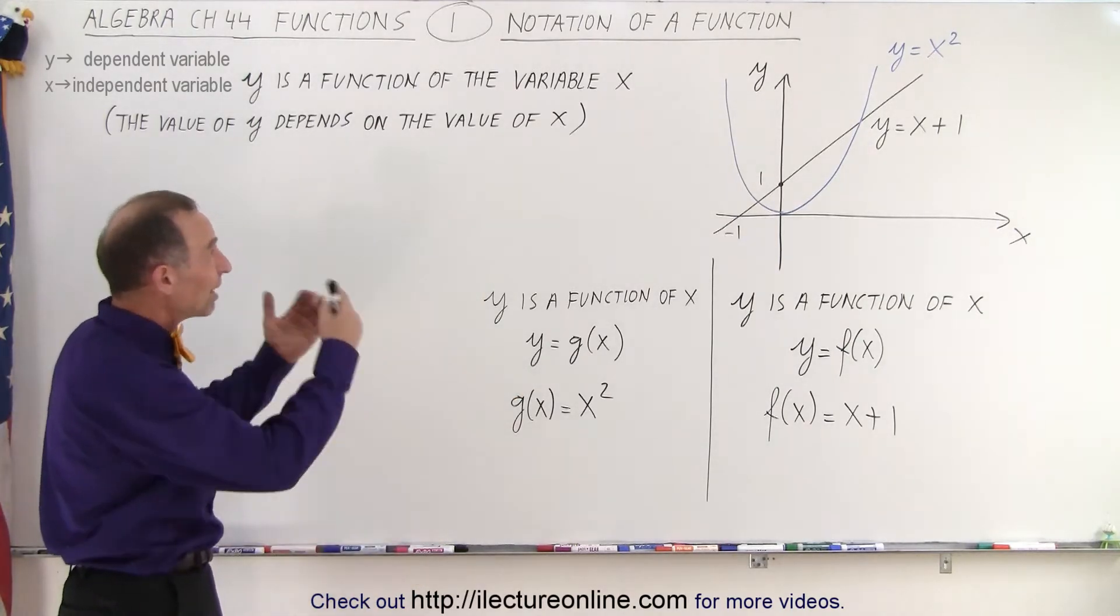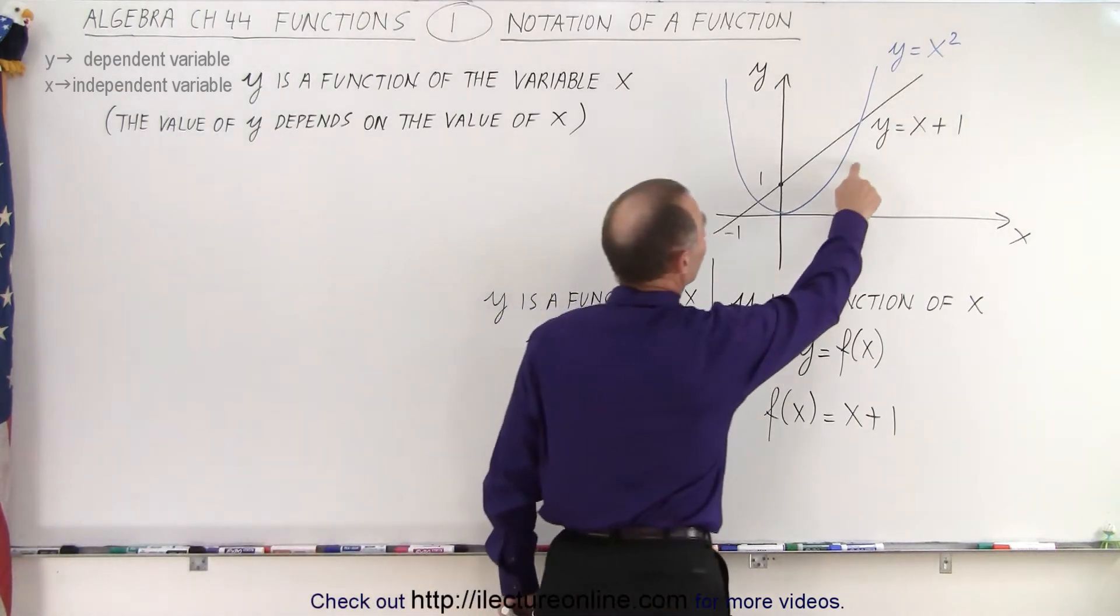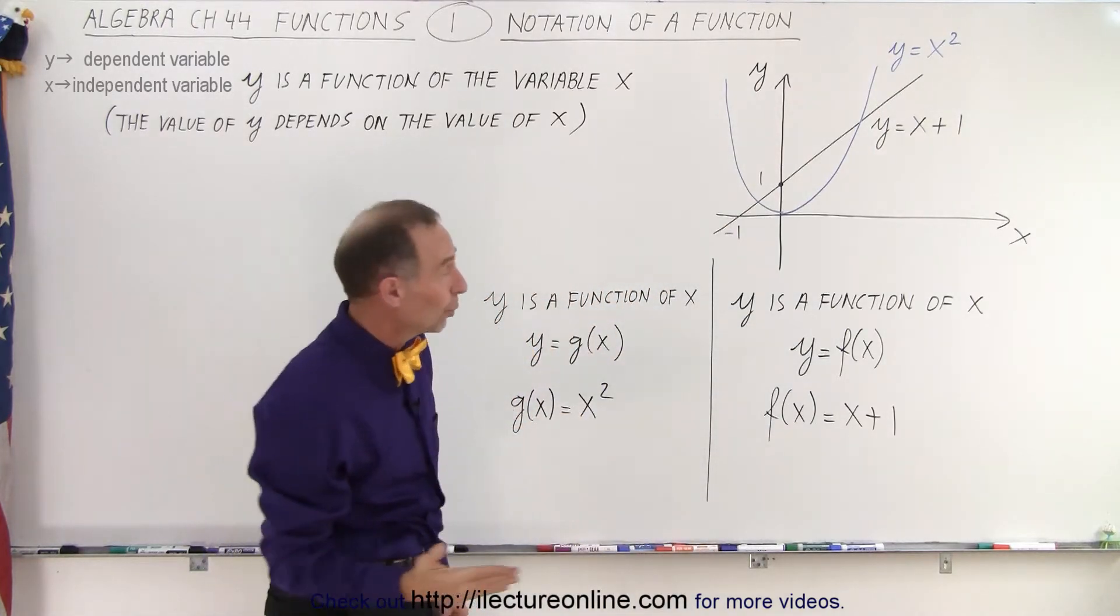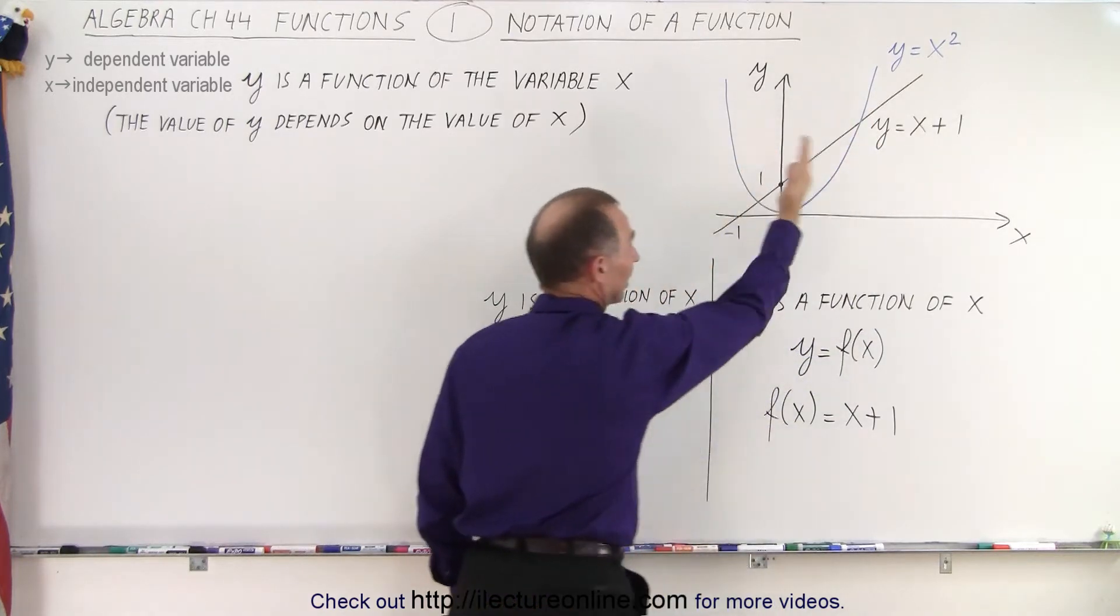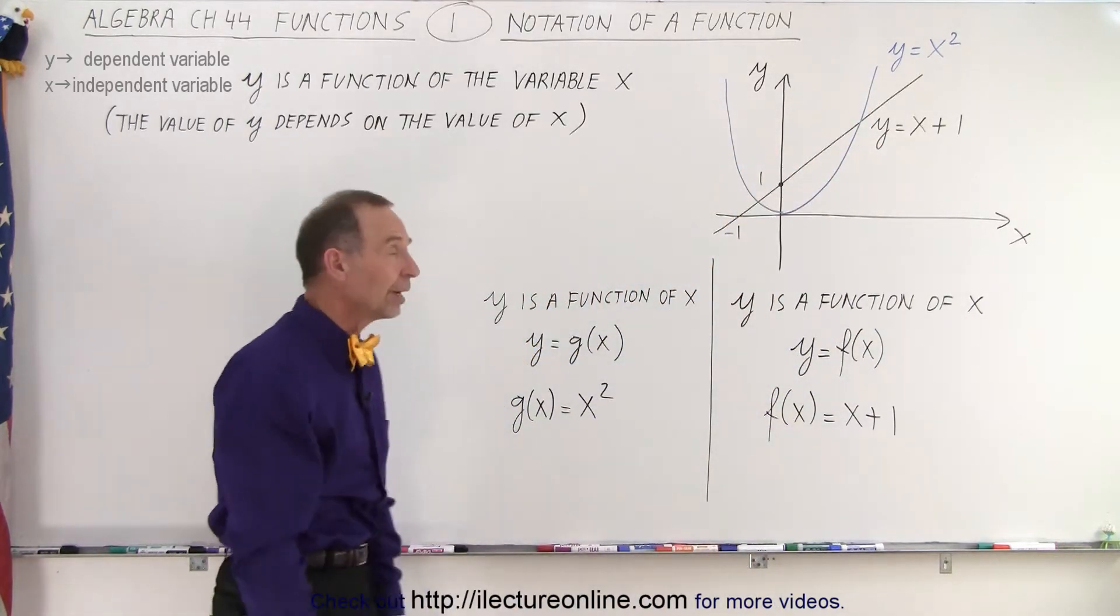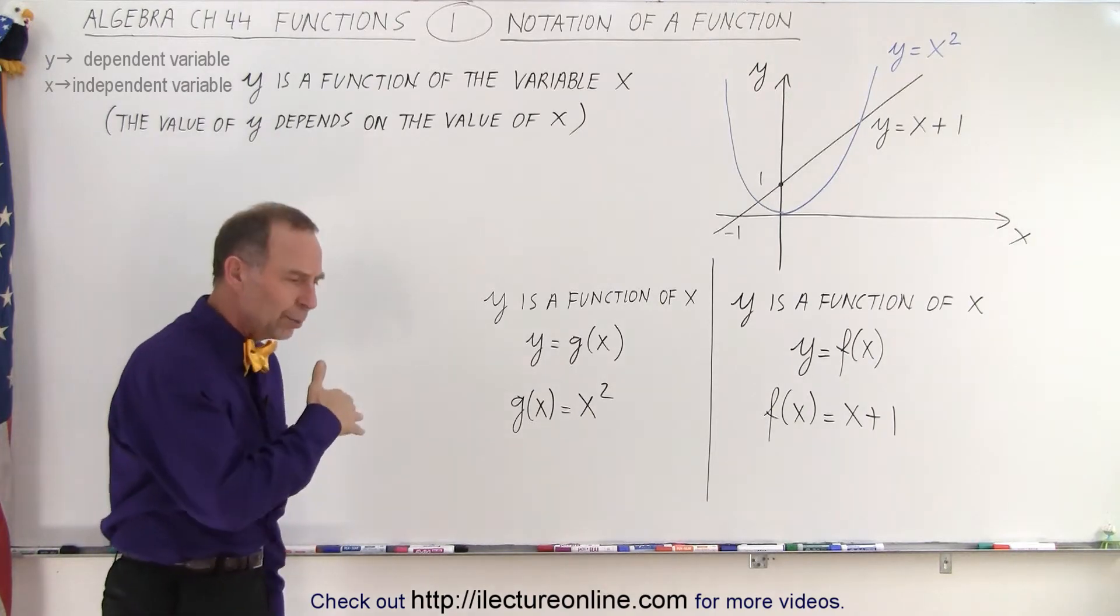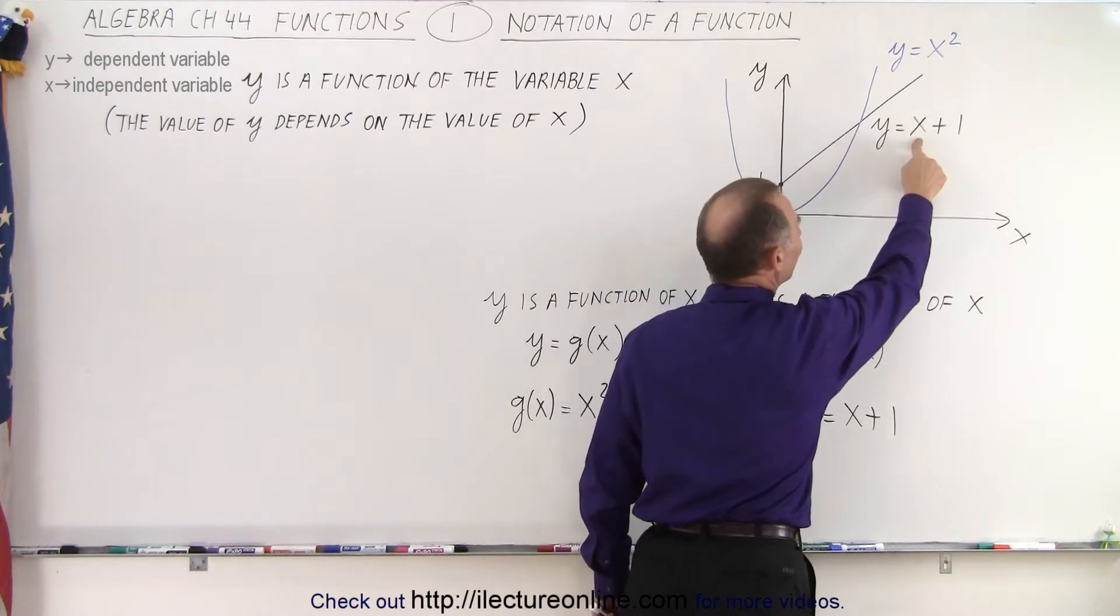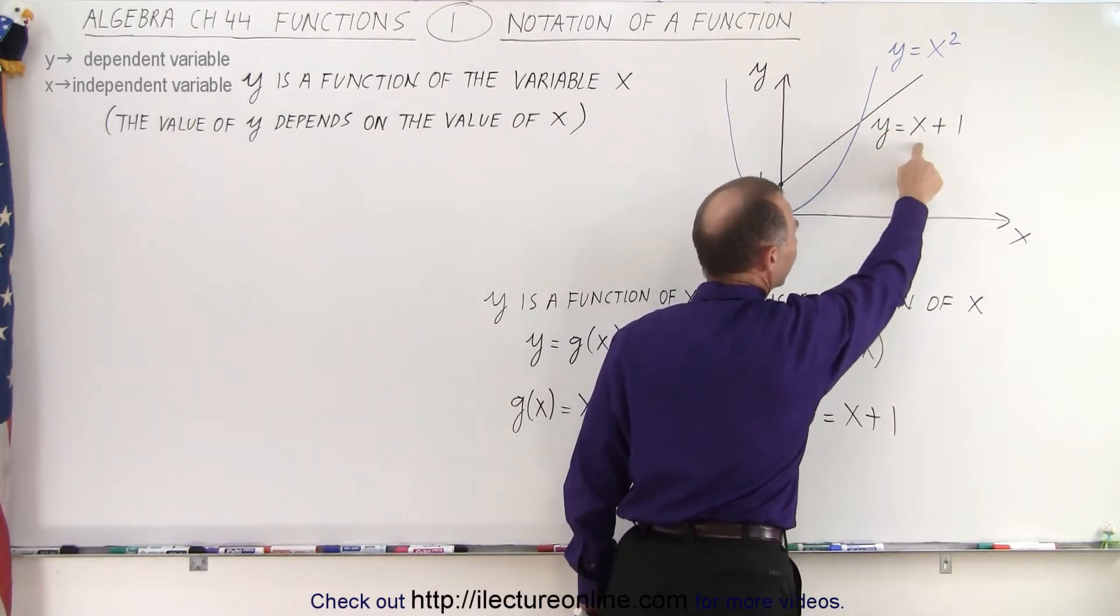So what is the notation of a function? Here I drew on the board two functions. We have y equals x plus 1 and y equals x squared. How do we know they're functions? We could do the vertical line test and the line will only cross once across the vertical line going from left to right. So we see the variable y, we see the variable x. x is the independent variable and y is the dependent variable. The value for y depends upon the value for x.